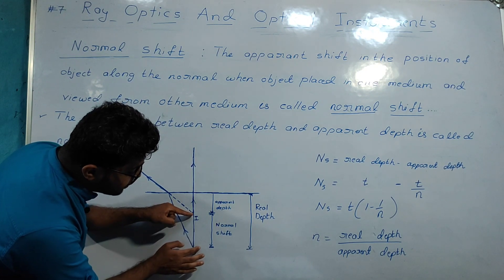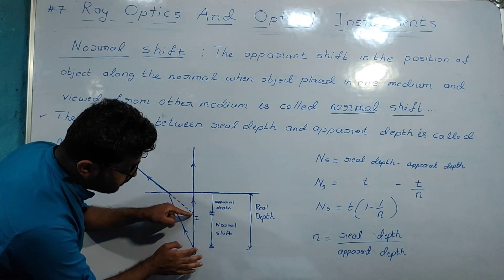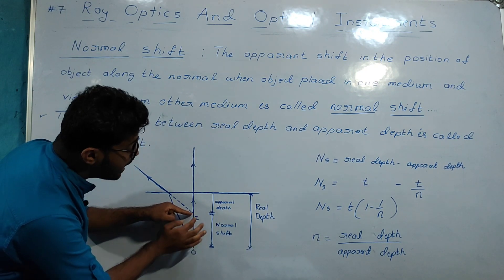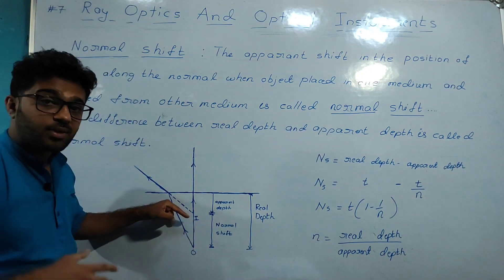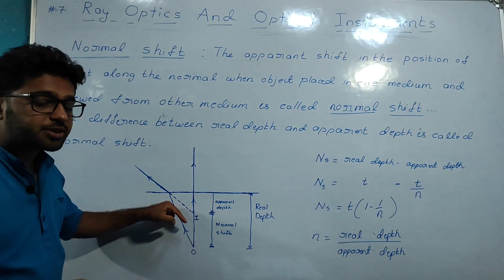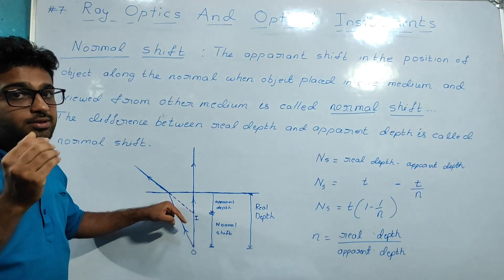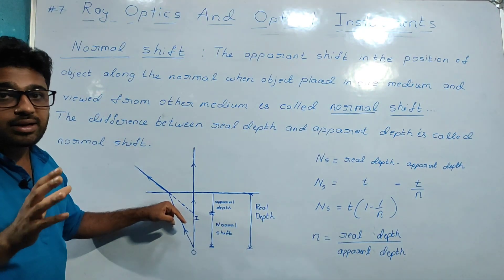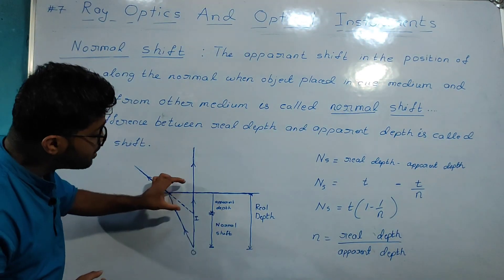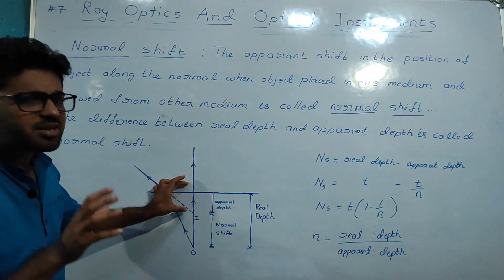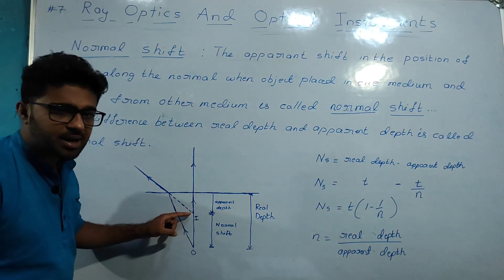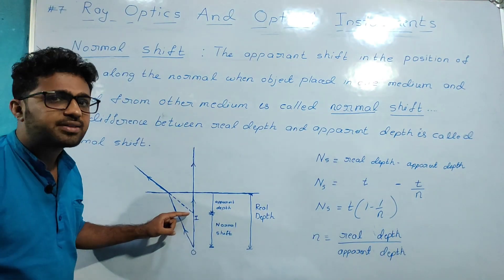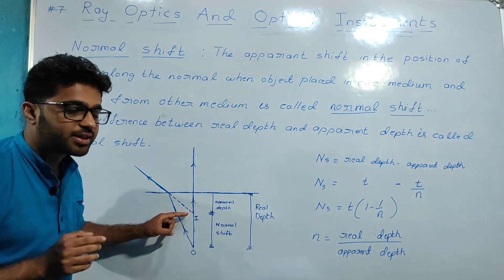The real depth is one value, but due to refraction, the object appears at a different depth. The difference between the real depth and the apparent depth is the normal shift.